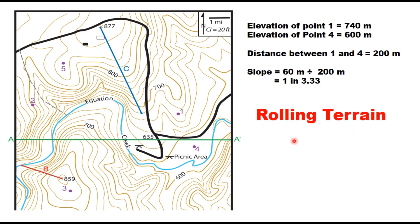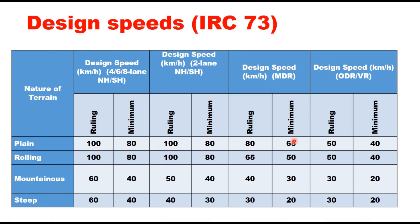Several parameters of road design are influenced by the type of terrain. The first is design speed. Design speeds as given in IRC 73 depend upon the type of highway and, for a particular type of highway, upon the type of terrain. For example, design speed for national highway and state highway ranges from 100 km/h to 40 km/h depending upon the terrain. Plain terrain allows 100 km/h minimum 80 km/h, whereas steep terrain allows only 20 to 40 km/h.